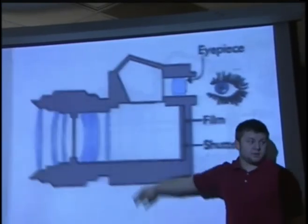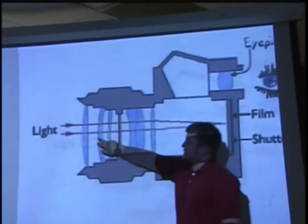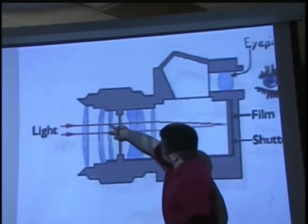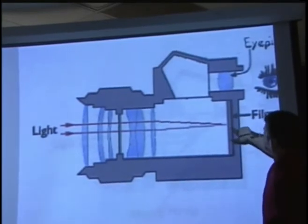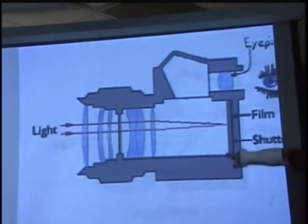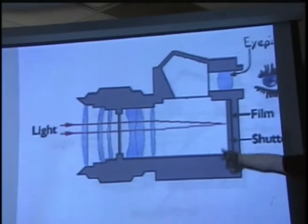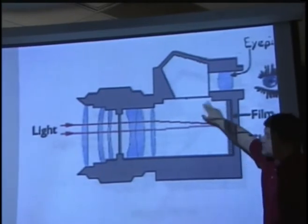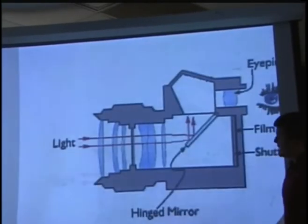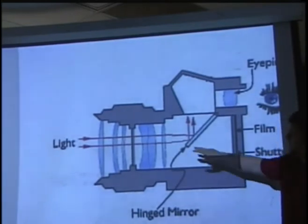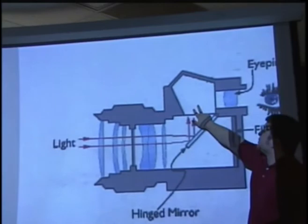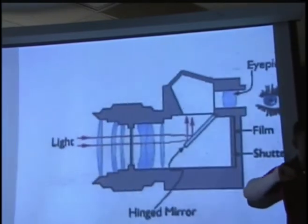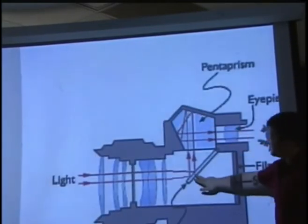As light enters the camera, as we discussed earlier, it goes through the series of lenses and is converged right on the film, which right now is being blocked by the shutter because we're not quite ready to take a picture. There's one more element in here that's not being shown yet, which is known as the hinged mirror. The hinged mirror's duty is to reflect the focused light up into the prism so that it can reach the eyepiece.